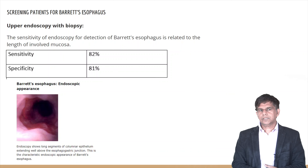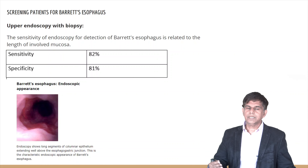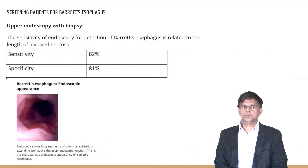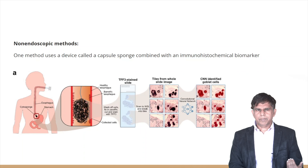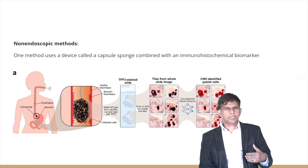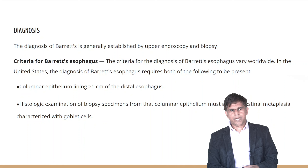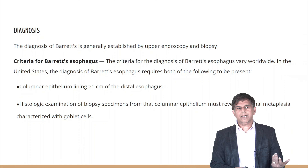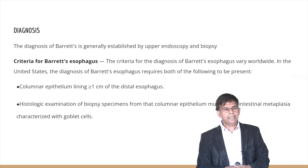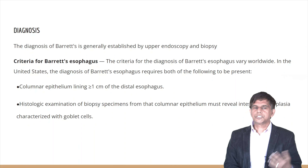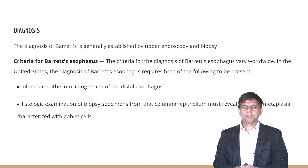For diagnosis, the first step is upper endoscopy. It has a sensitivity of 82% and a specificity of 81%. There is also a non-endoscopic method — a capsule sponge combined with an immunohistochemical biomarker. Diagnosis is established by upper endoscopy and biopsy. The criteria for Barrett's esophagus: columnar epithelium lining greater than one centimeter of the distal esophagus, with histological examination of biopsies revealing intestinal metaplasia characterized by goblet cells.